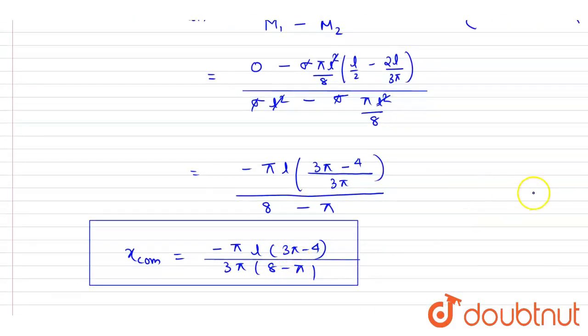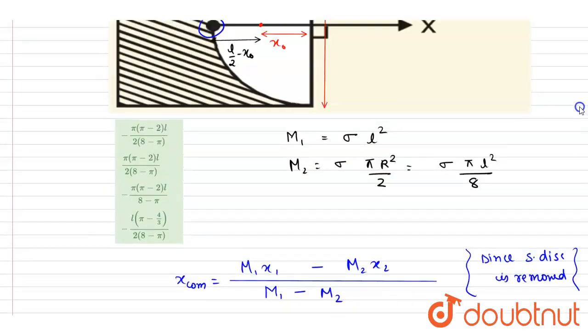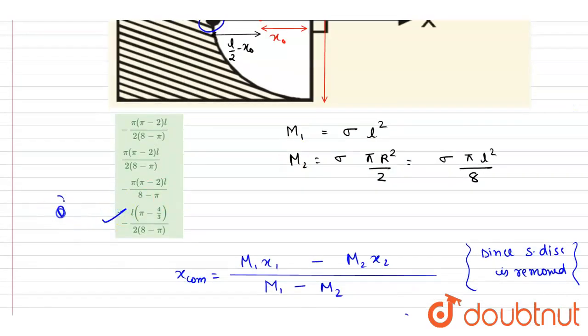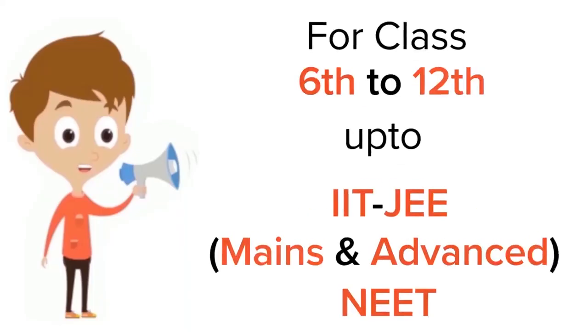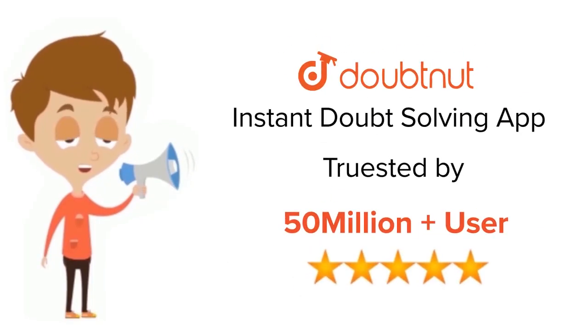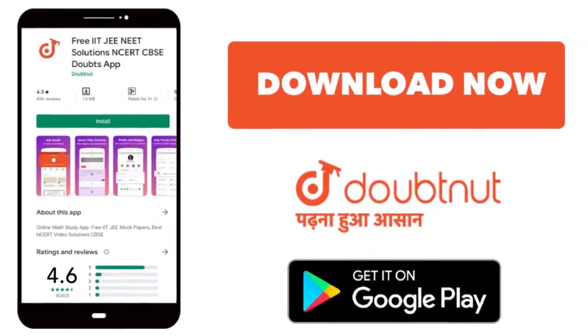If you divide this numerator and denominator by 3, you will get the answer. Thank you. For class 6-12, IIT-JEE, and NEET level, trusted by more than 5 crore students. Download Doubtnut app today.